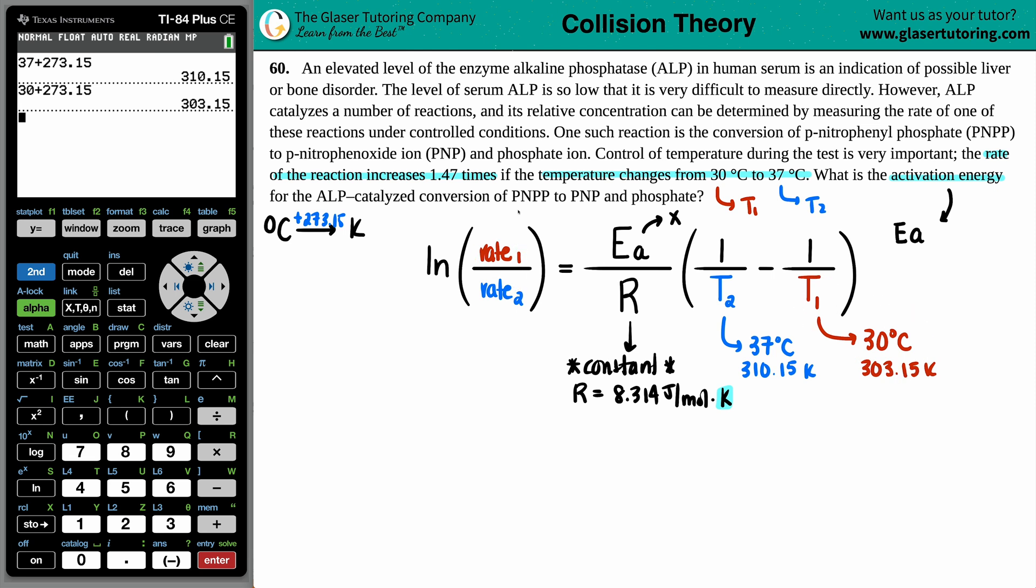Now, all that they said was that the rate of the reaction increases 1.47 times from this to this. So which temperature value do you think has the 1.47? Yeah, it's T2 because you're increasing it to that amount. So my rate 2 is 1.47. But now the thing is, well, what is going to be rate 1?